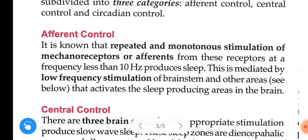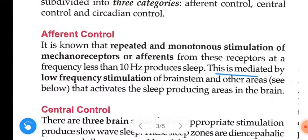Afferent control: it is known that repeated and monotonous stimulation of mechanoreceptors — or afferent input from these receptors — at a frequency less than 10 Hz produces sleep. This is mediated by low frequency stimulation of the brain stem and other areas that activate the sleep-producing areas in the brain.